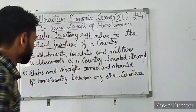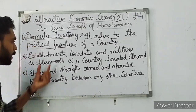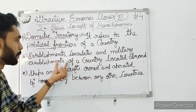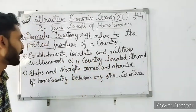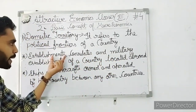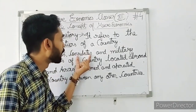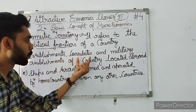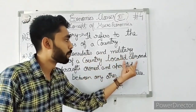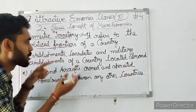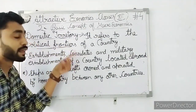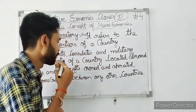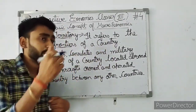Let's take examples. Example number one: establishments, consulates, and military establishments of a country located abroad. Koi bhi establishment ho, koi bhi consulate ho, ya koi bhi military establishment ho — jo kisi bhi country ki abroad located hai — woh jis country ki hogi, woh usi country ki economic territory ya domestic territory mein aa jaayegi.